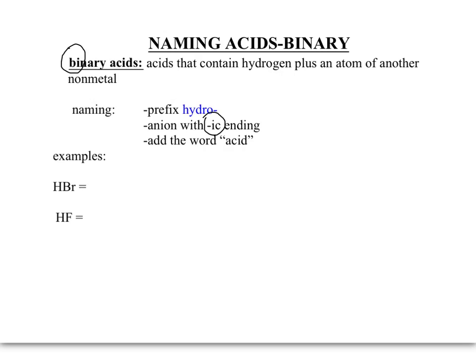For example, we have HBr. This compound starts with hydrogen, so that's our signal that this is going to be an acid. It's a binary acid because it's hydrogen plus one other atom. We start with the prefix 'hydro,' then bromine becomes 'bromic' with an '-ic' ending, and then we add the word 'acid.' So HBr is hydrobromic acid.